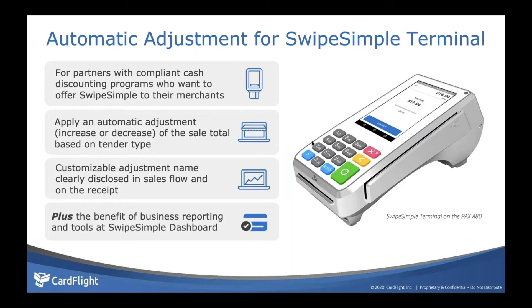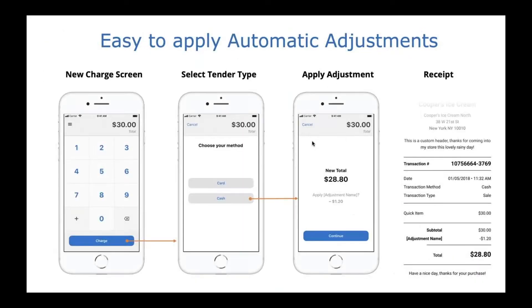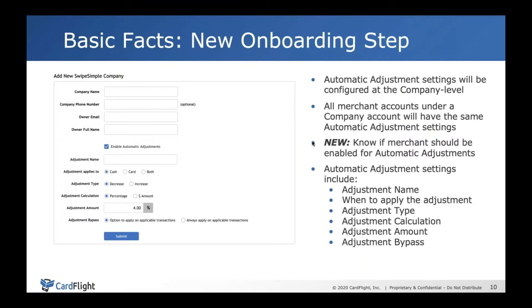Automatic adjustments for Swype Simple — before I get into that, I just want to show you how it looks when boarding. When boarding a Swype Simple account for automatic adjustments, you tell Boomtown this. You can set the adjustment name — it could be service fee, non-cash adjust, or cash discount. You can also have it apply to cash, card, or both at time of sale.